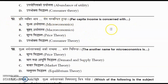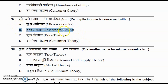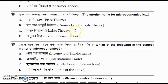Question number thirteen: national income is concerned with which branch? The options are microeconomics, macroeconomics, price theory, and consumer economics. The correct answer is option B, macroeconomics. Question number fourteen: another name for microeconomics is what? The options are price theory, demand and supply theory, market theory, and equilibrium theory. The correct one is option A, price theory.